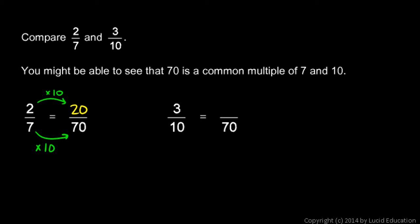So 20 over 70, that fraction, is equivalent to the 2-sevenths.